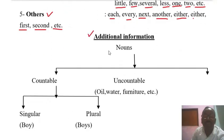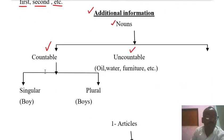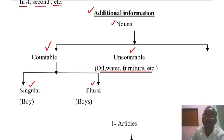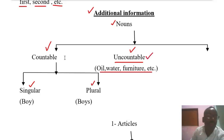Additional information about nouns: there are two types of noun — Countable and Uncountable. There are two types of countable noun: Singular and Plural. Examples of uncountable nouns are Oil, Water, Furniture. These cannot be counted. The noun which can be counted is known as a Countable noun.